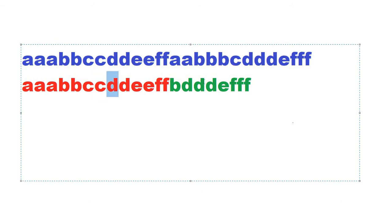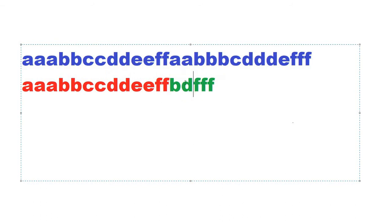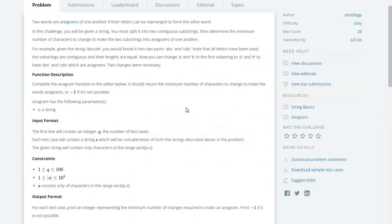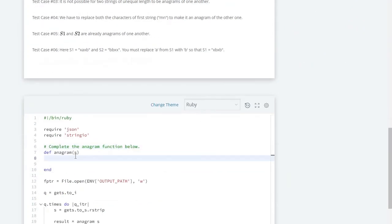We continue removing matching characters — we can remove d, e, and f. At the end we have three characters left. If we change those three characters, we can make these two strings anagrams. That will be the solution to our problem, so now we can code it.